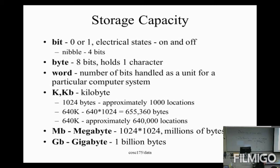In the previous chapter we studied about primary memory of the computer, that is RAM and ROM. In secondary memory we discussed devices like hard disk, CDs, DVDs, pen drives and cloud storage. Now let's study about hard disk and cloud storage in detail.